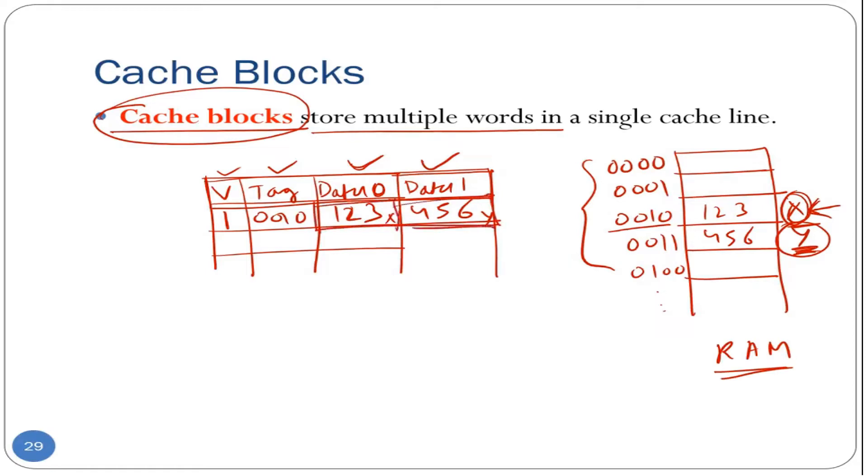However, note that there is still only one column or one room for the tag field, which is supposed to store the address of the data items. So now the question is, if there is only one entry, one tag entry that can be stored in each row, which tag should we store?